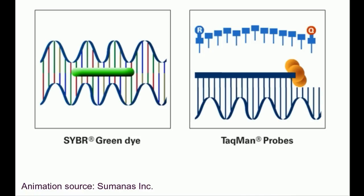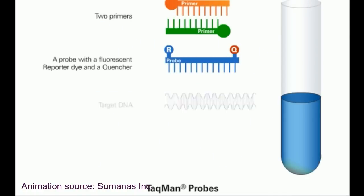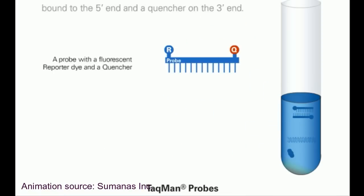The second type uses TaqMan probes. The TaqMan probe fluorescence format uses two primers, a probe with a fluorescent reporter dye and a quencher, the target DNA, and polymerase. The design of this probe is very important.